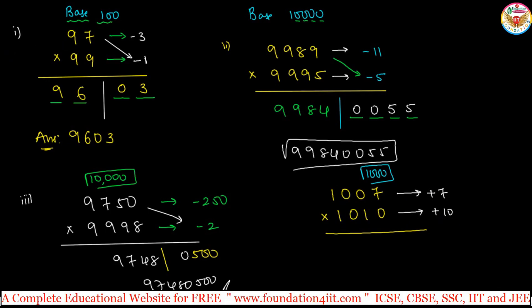Because the base is 1000, three digits, so right side three places. Immediately 7 into 10 is 70, one zero you need to keep. Next step, cross-way subtract but you have to add because of the plus symbol. 1010 plus 7 is 1017, or 1007 plus 10, anyhow you will get the same answer. 1010 plus 7 is 1017. This is the answer: 1017070.